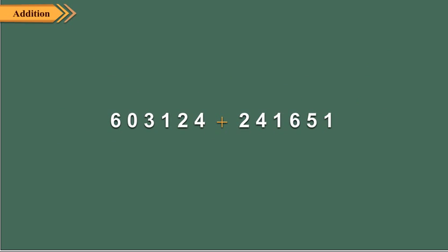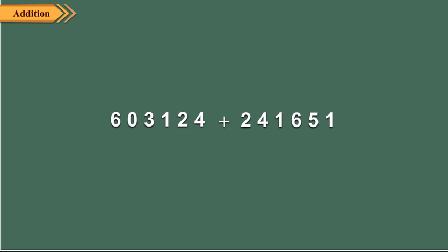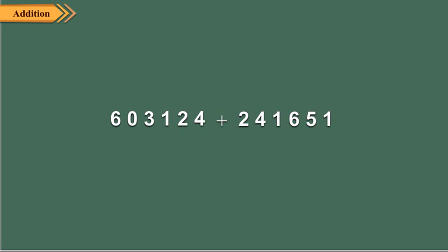In the same way, we add 6-digit numbers. Keep in mind, we always start adding from the extreme right, or the ones place. Let us find 603124 plus 241651.